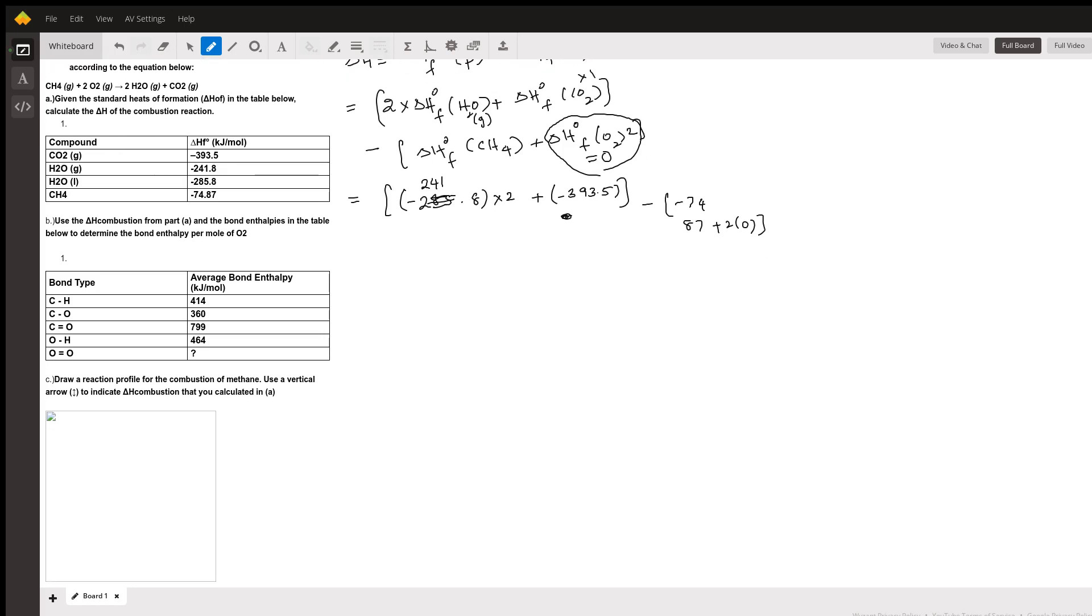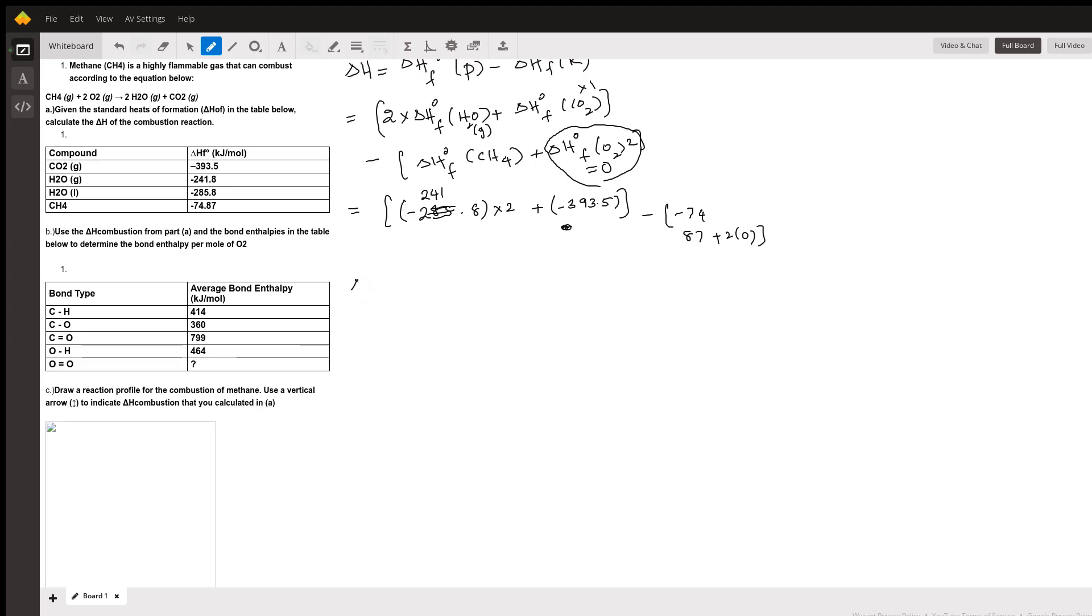And the next one, they need you to calculate the average bond enthalpy of oxygen bond. So same delta H value. Oh, we have to do this. In order to find the bond enthalpy value, we have to complete the calculation part of this.